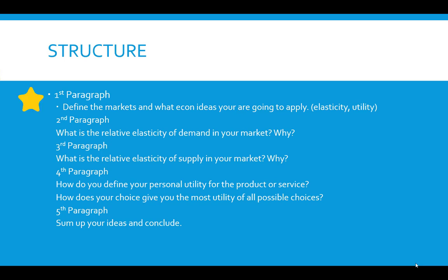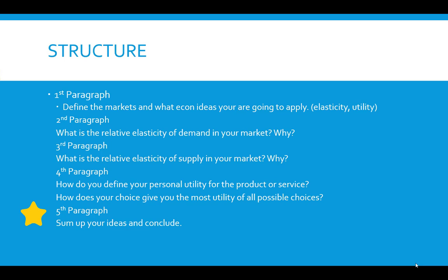Here's the suggested structure for your third blog post. Paragraph one: tell us what you're going to tell us — define the market and the economic ideas you'll apply. Paragraph two: discuss the relative price elasticity of demand in your market — is it elastic, unitary elastic, or inelastic, and why? Paragraph three: discuss the relative price elasticity of supply — elastic, unitary elastic, or inelastic, and why? Paragraph four: define your personal utility for the product or service and explain how your choice gives you the most utility of all possible choices.